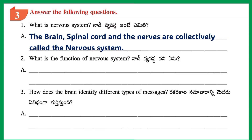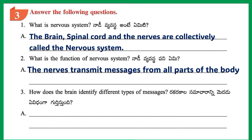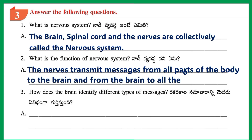Question 2: What is the Function of the Nervous System? Answer: The Nerves transmit messages from all parts of the body to the brain, and from the brain to all the body parts.